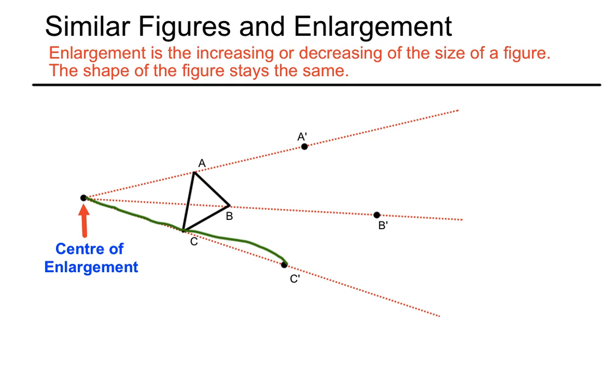The image of C, C dash there. And what we have to do then is join the dots that we've made, and we have enlarged that shape. We've doubled the size of the shape. We've applied a scale factor of 2 to that.